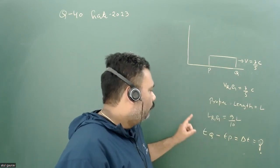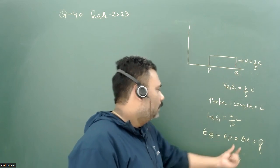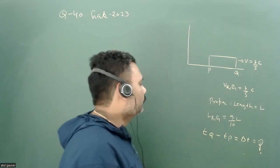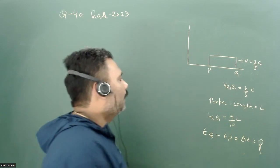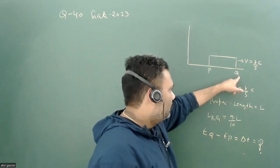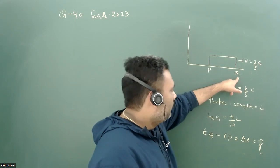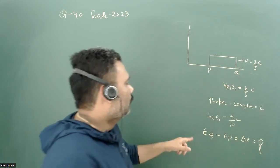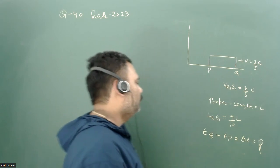We have to calculate tQ minus tP, that is delta t. The observer on the ground sees point Q at time tQ and point P at time tP, and we have to find tQ minus tP.